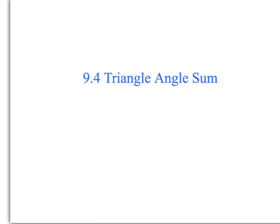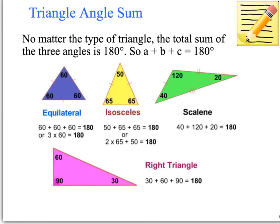Today we're going to look at triangle angle sum, which is section 9.4 in the textbook. When we're looking at triangle angle sum, which is the sum of all angles in a triangle, that sum is actually 180 degrees. No matter what type of triangle, the total sum of all the angles is 180 degrees. Therefore, angle A plus angle B plus angle C equals 180 degrees.